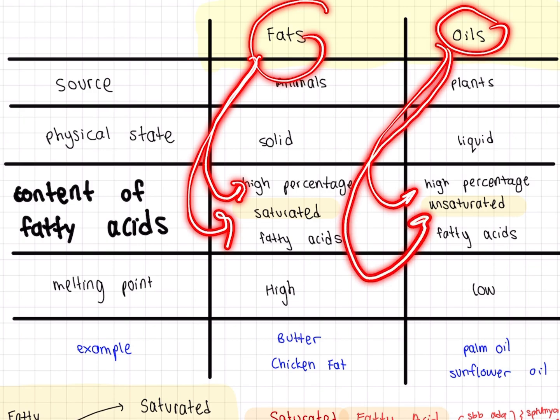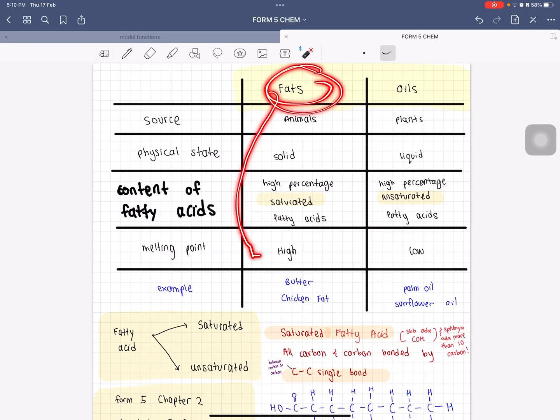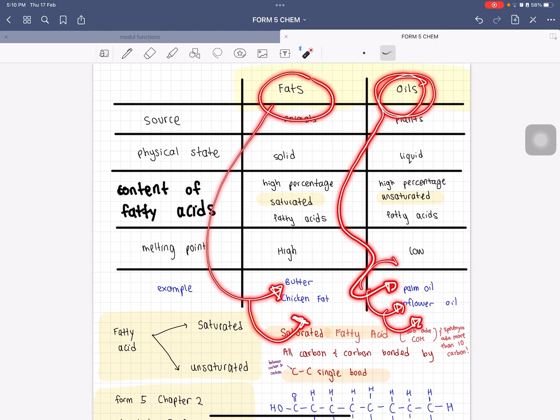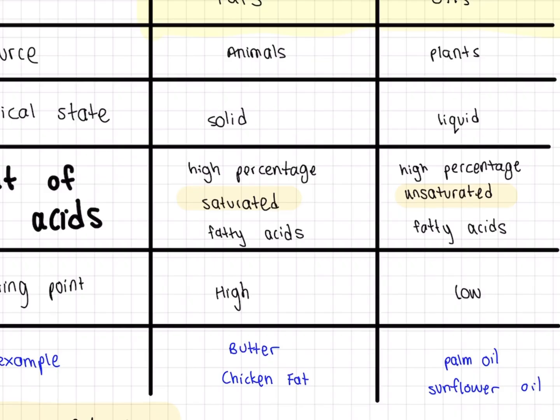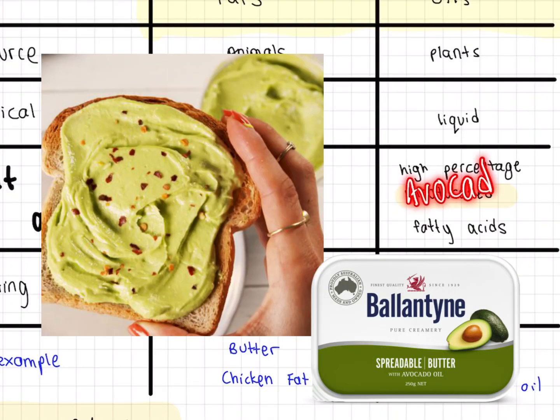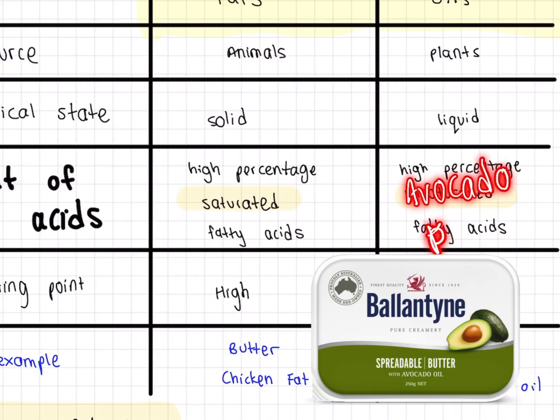Since fat is solid, it has definitely a higher melting point compared to oils. What are some examples of fats? Butter, chicken fat. What are some examples of oils? Palm oil, sunflower oil, avocado oil, olive oil. Now if you see avocado butter, if you ever do...